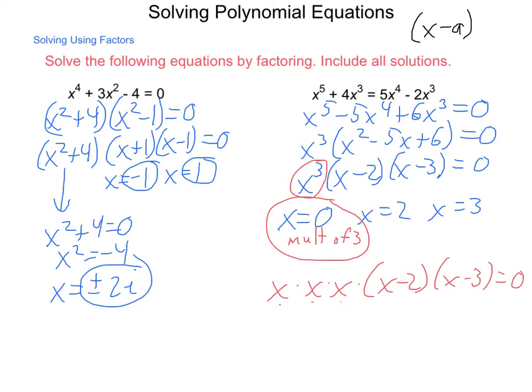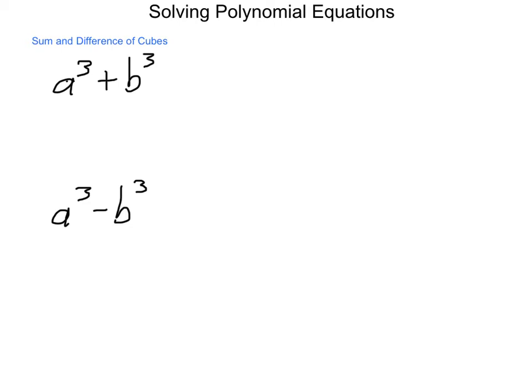We can factor polynomial equations if they result back into some sort of quadratic-like expression. Now let's take a look at a couple of special patterns that exist in cubics. In our quadratics, we had two special patterns: the difference of squares and perfect square trinomials. Now, we're going to be looking at special patterns for our sum and difference of cubes.